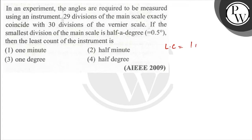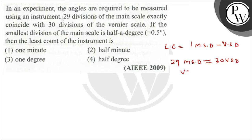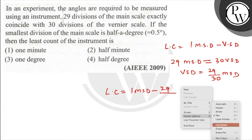Least count is 1 main scale division minus 1 Vernier scale division. 29 main scale divisions equal 30 Vernier scale divisions. So 1 Vernier scale division equals 29/30 of a main scale division. Therefore, least count equals 1 MSD minus (29/30) MSD, which gives 1/30 MSD.